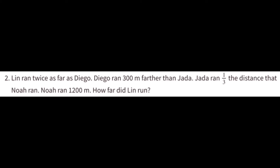The second puzzle is about four runners: Lynn, Diego, Jada, and Noah. You are given Noah's run — Noah runs 1,200 meters. Jada's run is related to Noah's, Diego's run is related to Jada's, and Lynn's run is related to Diego's. So you can work backwards: figure out Jada's run from Noah's, Diego's from Jada's, and Lynn's from Diego's.